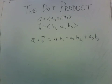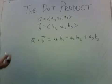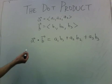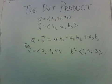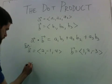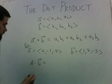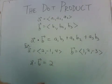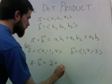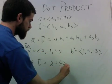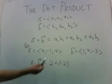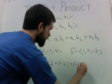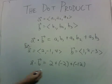Of course this begs the question why would you bother to define such a thing, but just to make sure we're on the same page, let me do a quick example with actual numbers. If a and b are these two vectors, then a dot b is 2 times 1 plus negative 1 times 2, which is negative 2, plus 4 times negative 3, which is negative 12, so we get negative 12.